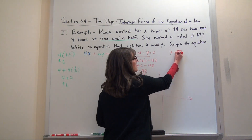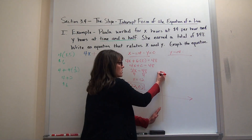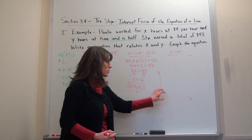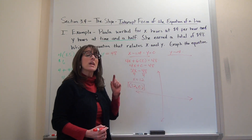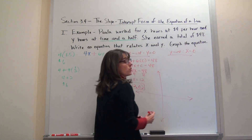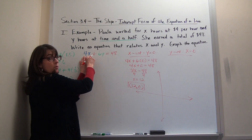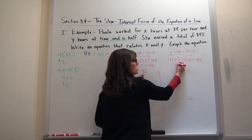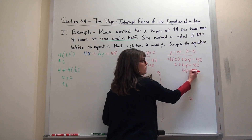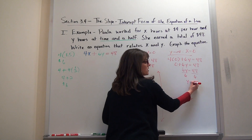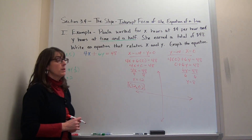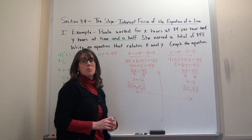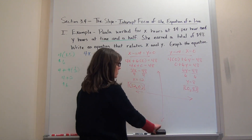To get the y-intercept, that's where the graph crosses the y-axis. Every point on the y-axis has an x-coordinate of zero because there's no left or right movement. So I make x equal to zero: 6y = 48, divide by 6, and y = 8. The y-intercept is the point (0, 8). Two points make a line — I've got (12, 0) and (0, 8).